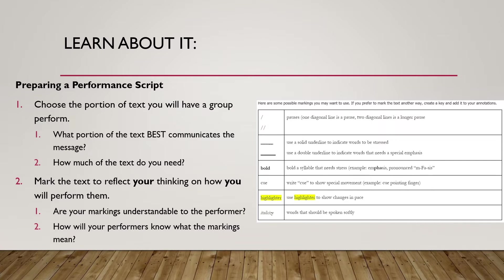The second step is to mark the text to reflect your thinking on how you would perform it. You want to make sure your markings are very understandable for your performers and that your performers understand the types of markings you will use. Sample markings are included in the lesson, but you don't have to use these — you could come up with your own and include that key in your script.